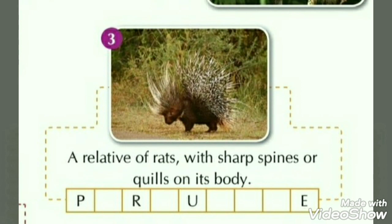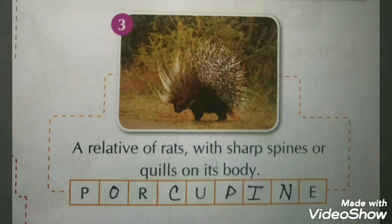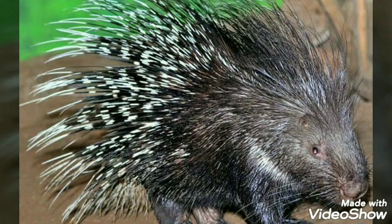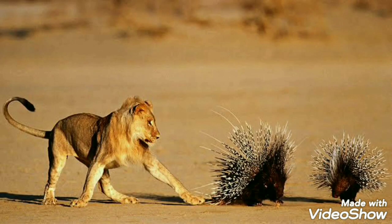Third is a relative of cats with sharp spines or quills on its body. The answer is Porcupine. They have spines to protect them from their predators.